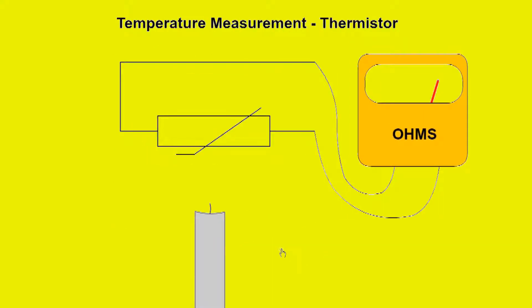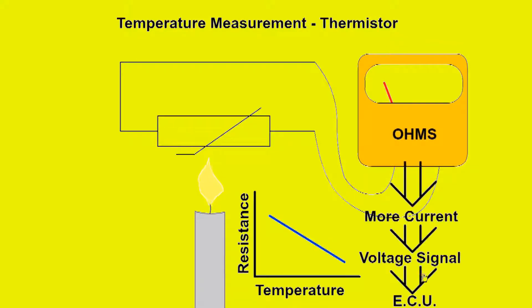Temperature sensors use a thermistor which is sensitive to a change in temperature. It has a negative temperature coefficient. The resistance of the thermistor decreases as temperature rises. They are used for intake air and cooling temperature. When resistance decreases, there is an increase in current which is converted to a voltage signal for the ECU.